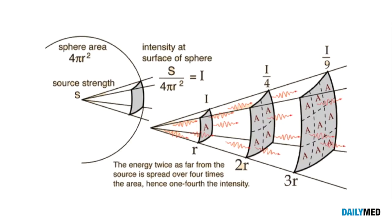For example, when we have an x-ray source defined in this diagram by S, the x-rays will spread out in the form of a sphere. That's why we use the sphere area as part of our equation for calculating the intensity. Intensity in this case will represent the radiation exposure at that level.